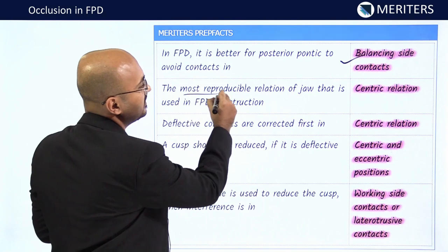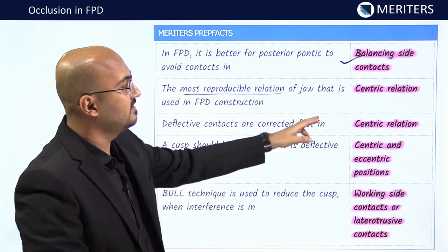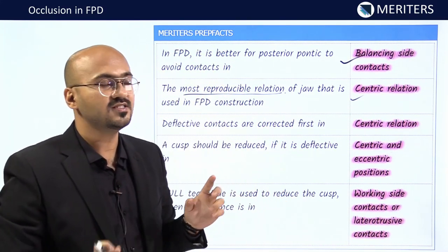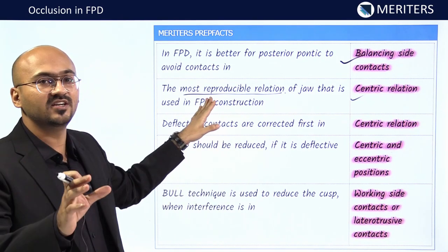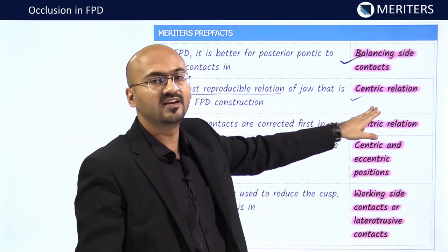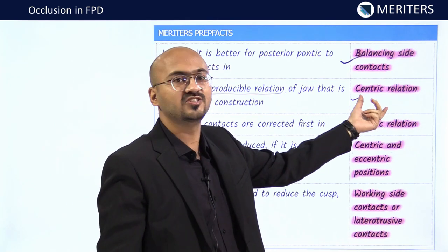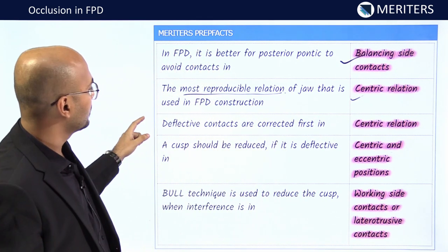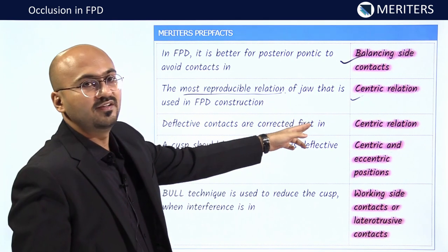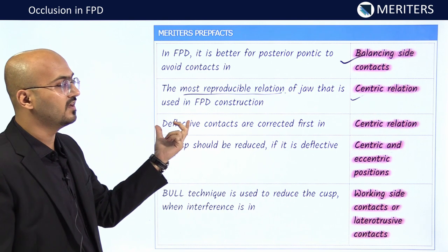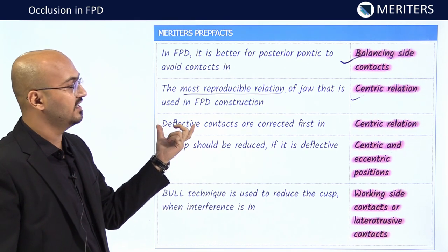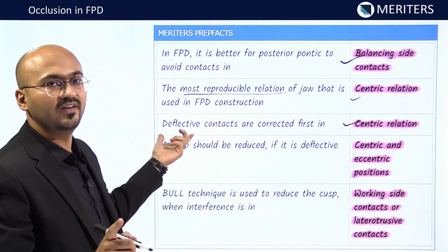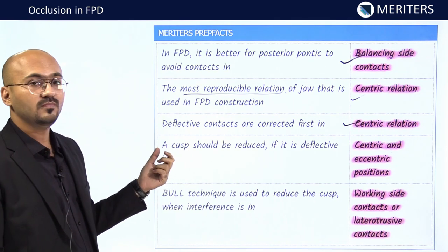The most reproducible relation of the jaw used in FPD construction is centric relation. Wherever you see 'most reproducible relation,' it has to be centric relation, which is independent of tooth contact — it is a condyle-to-fossa relation. You can guide the patient into centric relation reliably. Deflective contacts, meaning interferences, should be corrected first in centric relation.